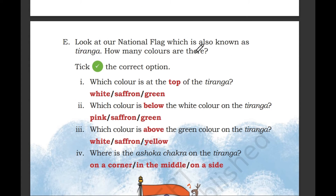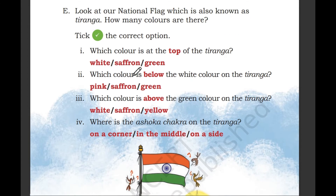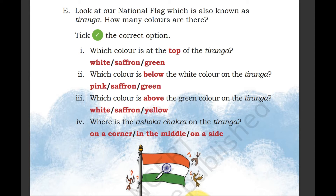Look at the national flag, also known as Tiranga. How many colors are there? Tick the correct option. There are three colors, and blue is also there on the Ashok Chakra, so we can say four colors.